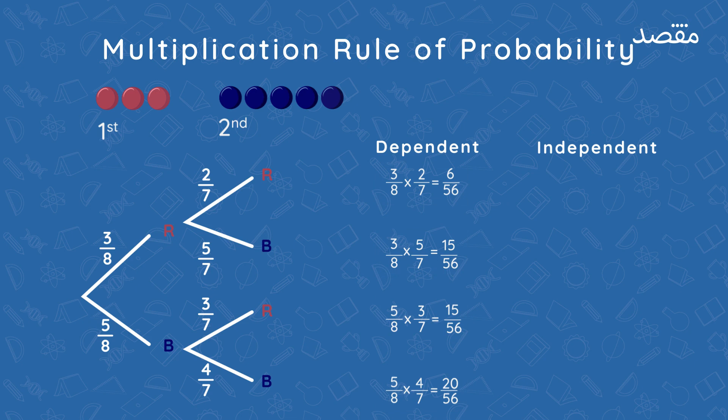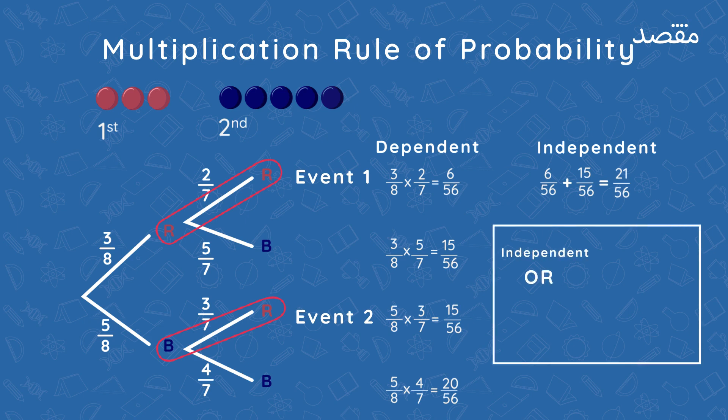When events cannot occur together, like red red and blue, we add the probabilities like this. So, or means to add probabilities and and means to multiply probabilities.